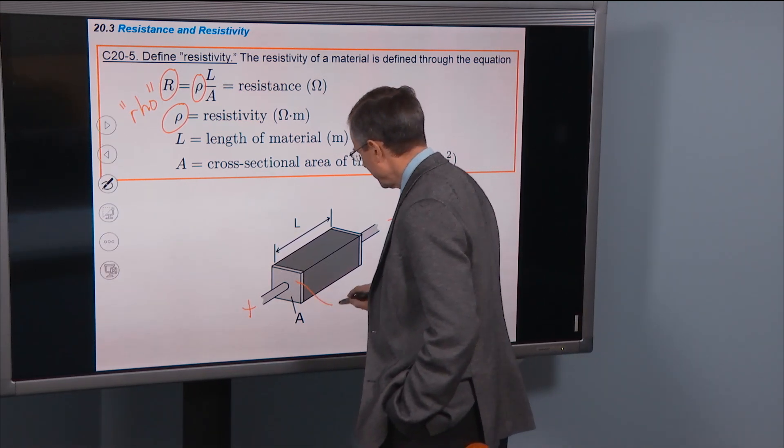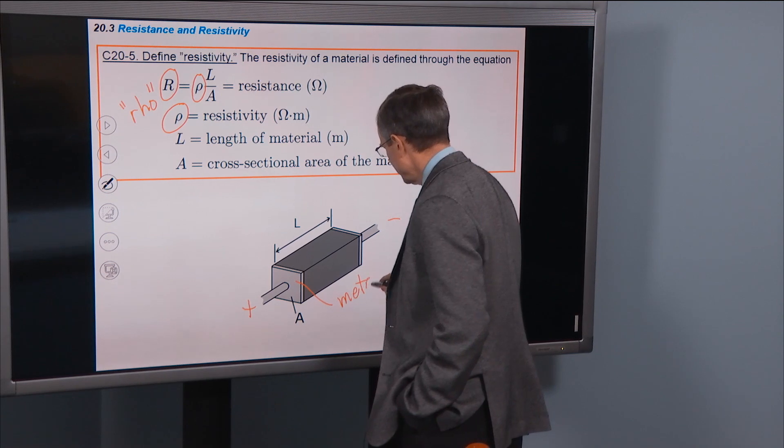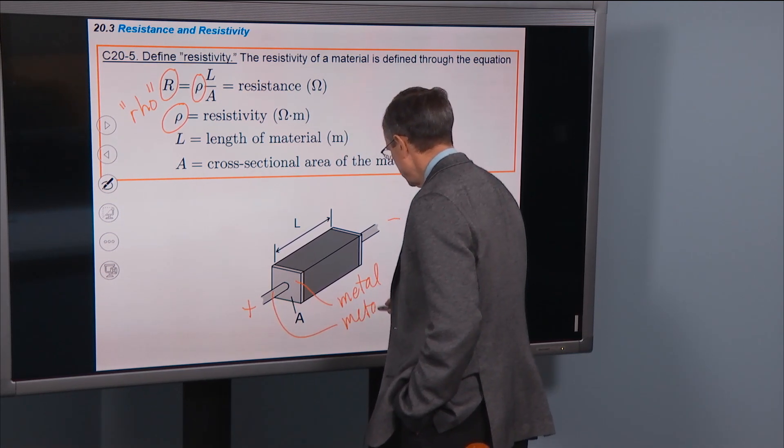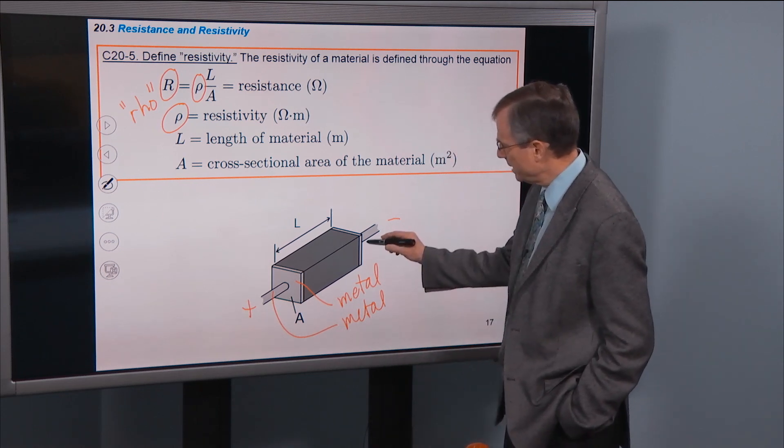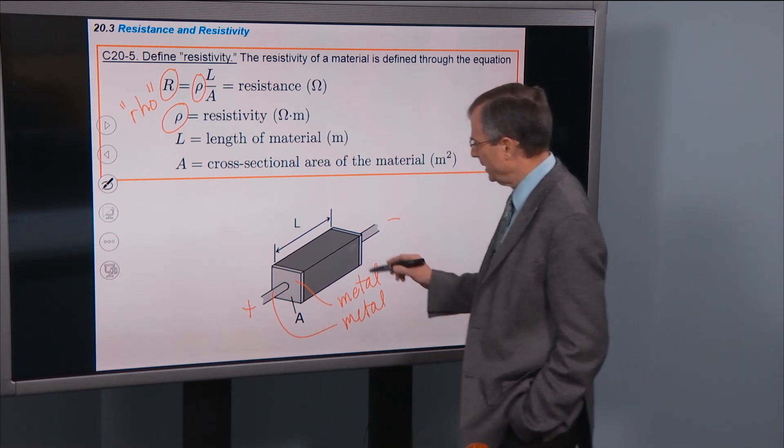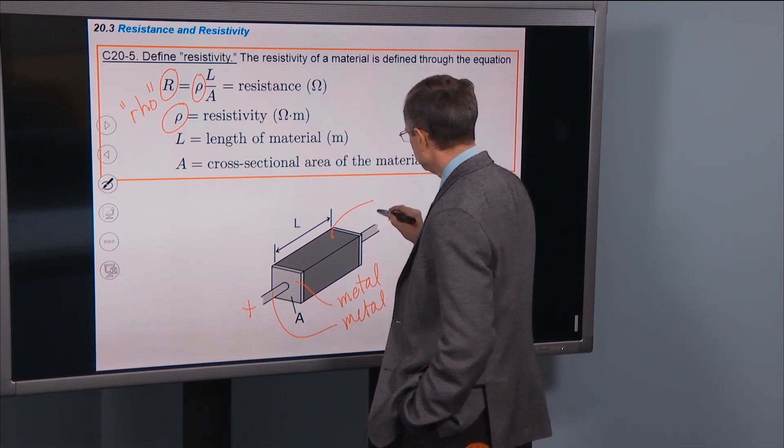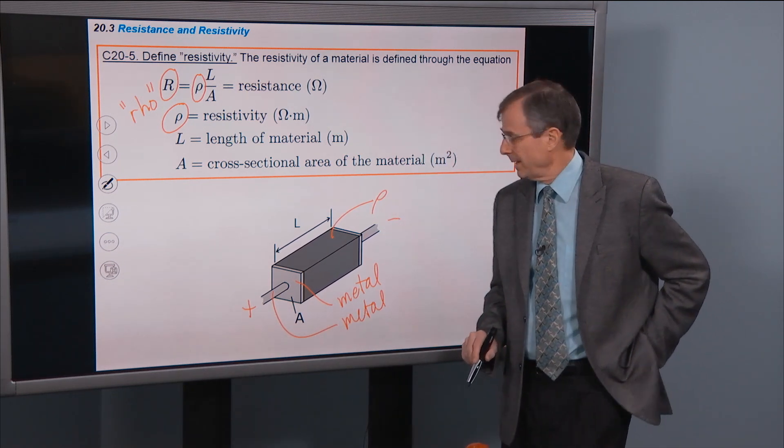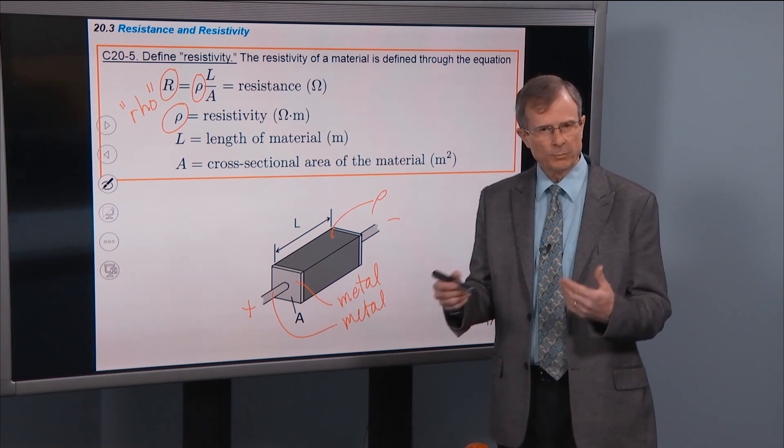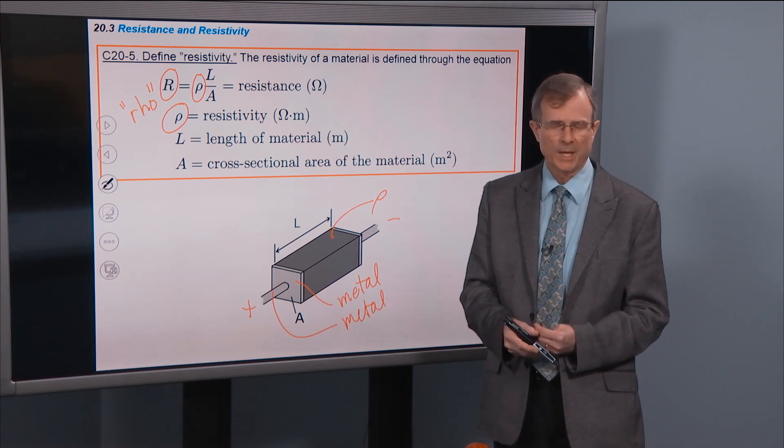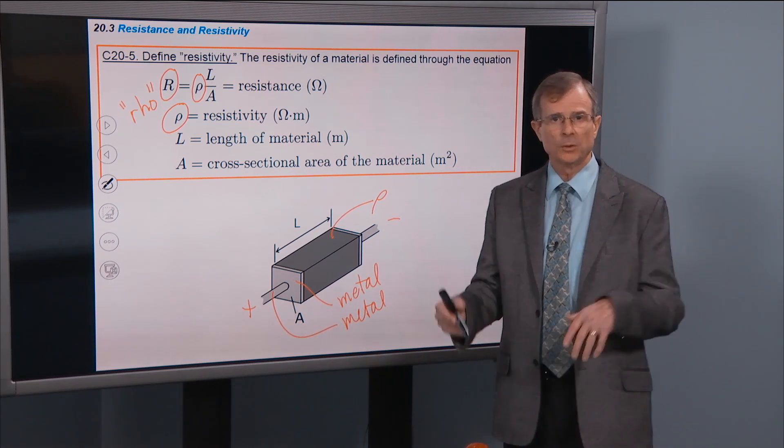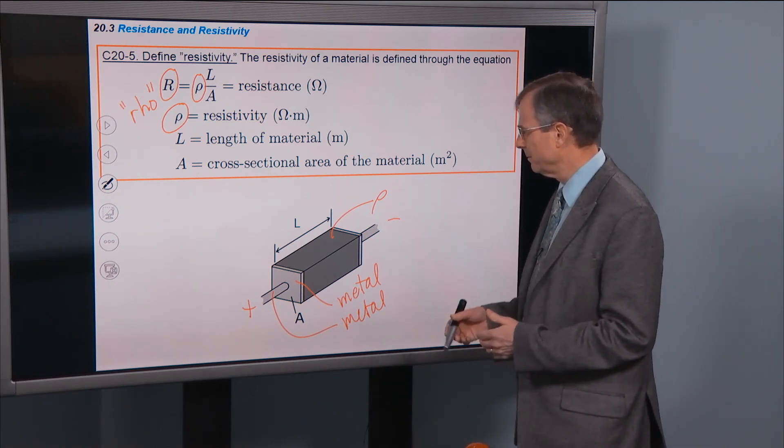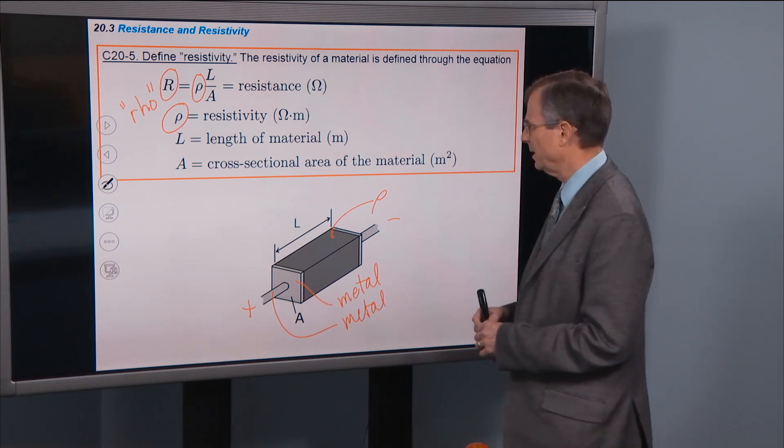This is metal conductor. Same thing over on the other side and then the material here is the material that we're interested in and you're going to put some kind of material in there that will resist electricity more or less. Usually metals like copper or aluminum don't resist it hardly at all. But we'll put some material in there that will resist the electricity.